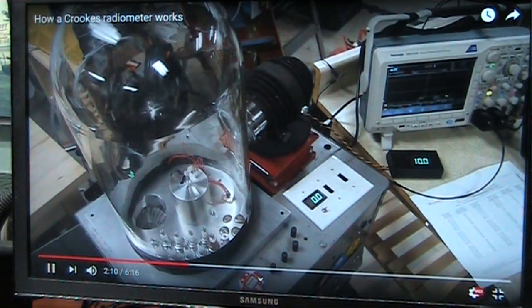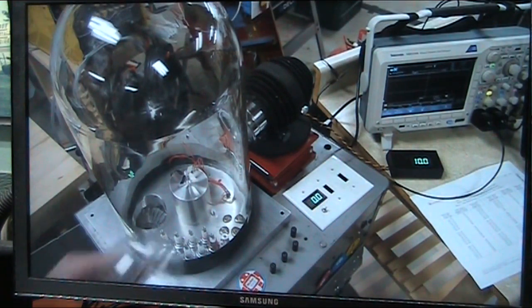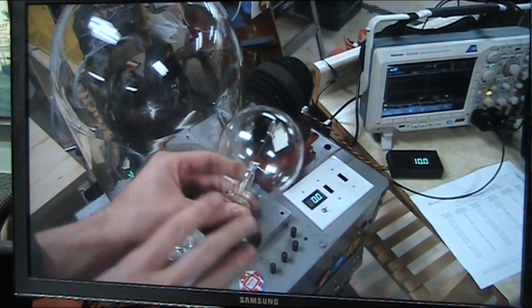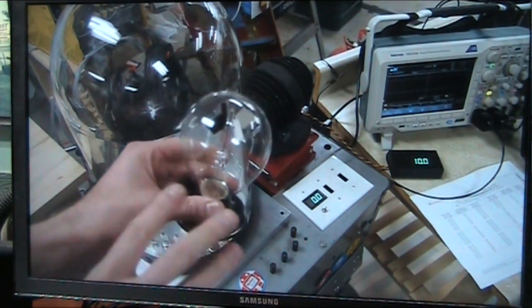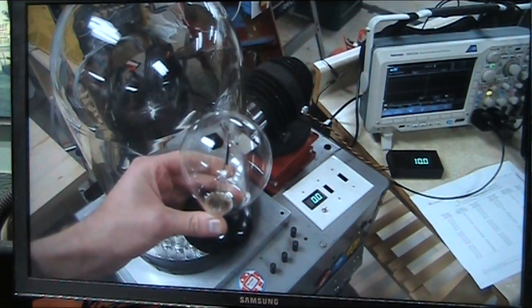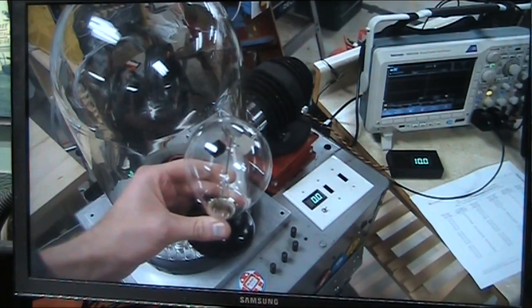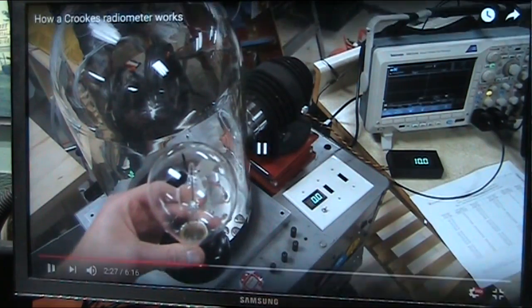As you might have guessed, the effect is thermal and it does require that there be some gas in the radiometer envelope. If there were no gas at all inside here, then the only thing that could touch the rotor and make it spin would be the photons shining on it. And we've determined that can't be right because the photons would be making it spin the other way. All right.